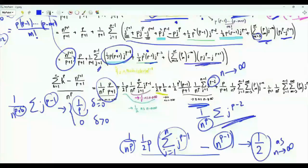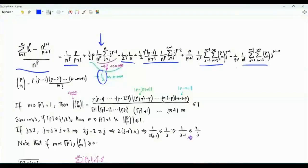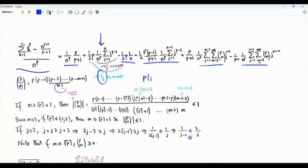To obtain the final result we still need to show that the limit of the remaining sum here divided by n^p tends to 0 as n tends to infinity. As n tends to infinity the identified terms tend to 0 and the surviving term tends to 1/2. If we can show that the remainder terms tend to 0, then the left-hand side tends to 1/2 as n tends to infinity. These two remainder sums can be handled similarly; I will focus on the sum where j is raised to the power p+1-m.